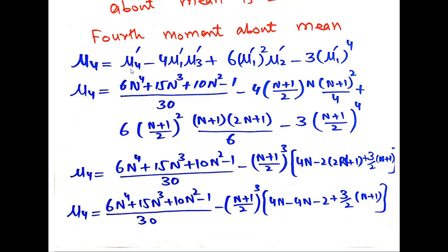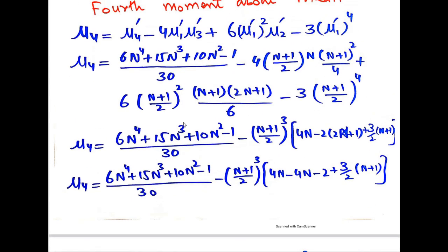The fourth moment about the mean: μ₄ = μ₄′ − 4μ₁′μ₃′ + 6(μ₁′)²μ₂′ − 3(μ₁′)⁴. Here μ₄′ = (6n⁴ + 15n³ + 10n² − 1)/30. The link for the video on moments about origin can be found at the end screen. Substituting the values of μ₁′, μ₃′, μ₂′, and μ₁ into the formula.